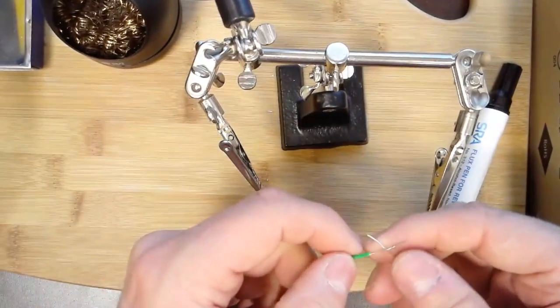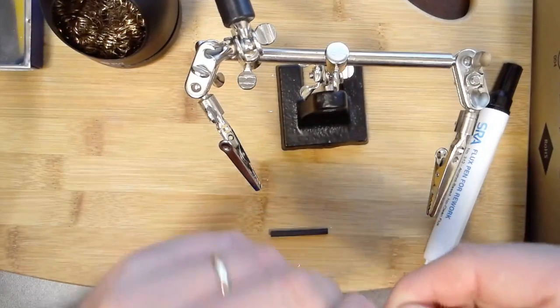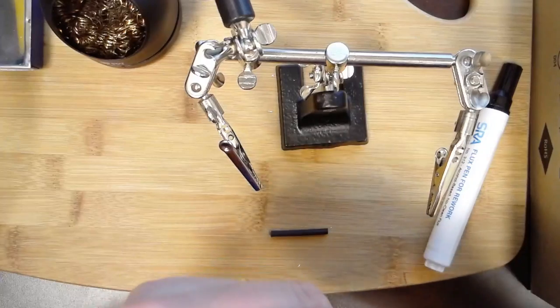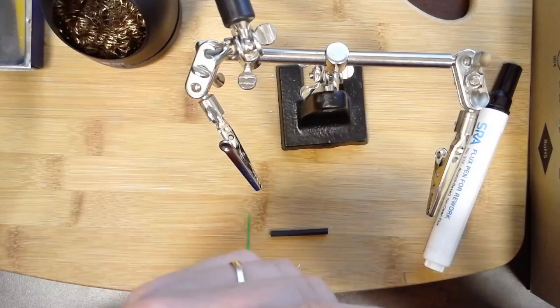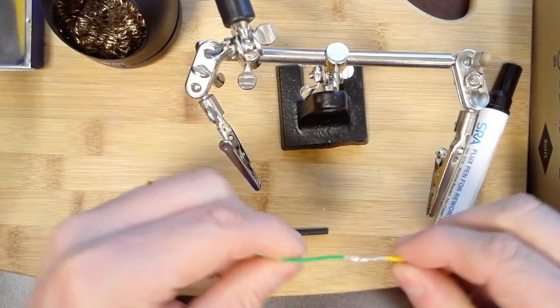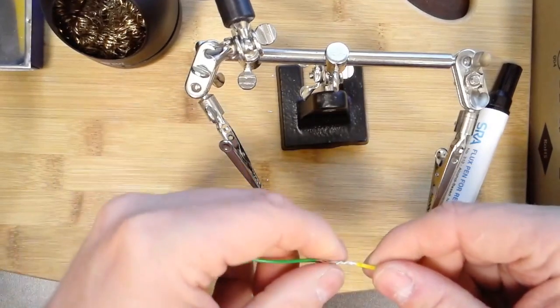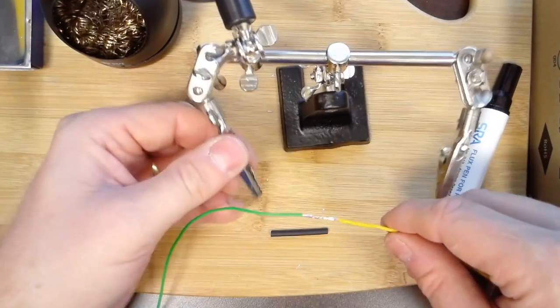The first thing I'm going to work on is creating a good mechanical connection. I'm just going to twist this wire around a few times. I also want to make sure that these wires aren't poking out. We don't want them poking through that heat shrink.